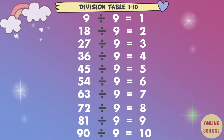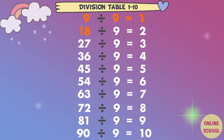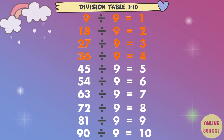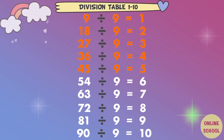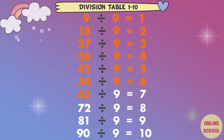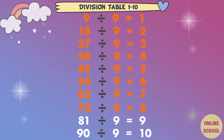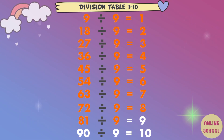Divided by 9. 9 divided by 9 equals 1. 18 divided by 9 equals 2. 27 divided by 9 equals 3. 36 divided by 9 equals 4. 45 divided by 9 equals 5. 54 divided by 9 equals 6. 63 divided by 9 equals 7. 72 divided by 9 equals 8.